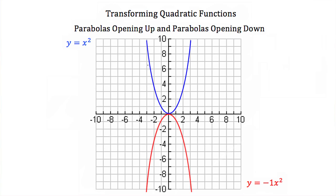Here we have the graph of y equals x squared in blue and y equals negative 1x squared in red. Whenever we have a positive coefficient on our x squared term, our parabola will open upward. Whenever we have a negative coefficient, our parabola is going to open downward. Notice that these two parabolas are almost exactly the same — they have the same axis of symmetry, the same vertex, and about the same width. The only difference is that they go in completely different directions because we have a negative coefficient on our x squared term.